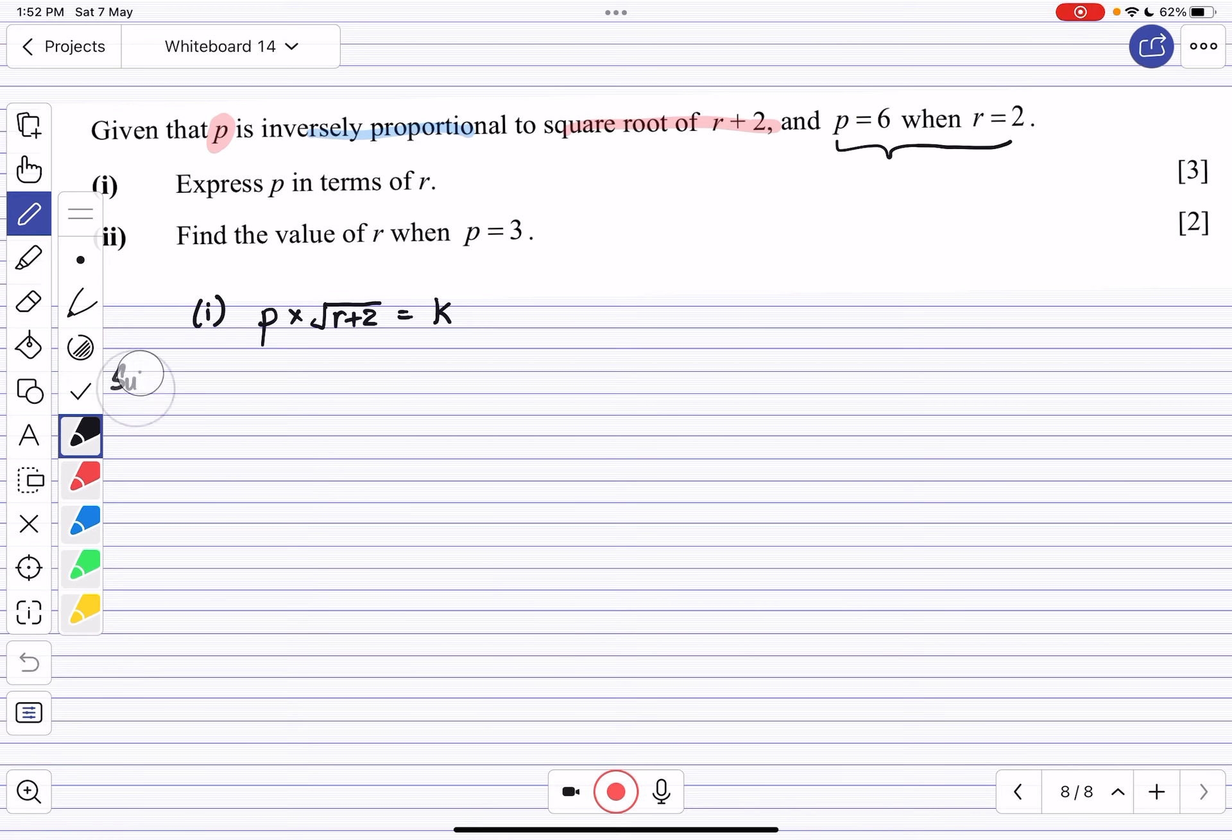We substitute p equals 6 and r equals 2. This gives us 6 multiplied by the square root of 2+2, which is the square root of 4. This equals k, so k equals 6 times 2, which is 12. Once we have k, we know the equation.